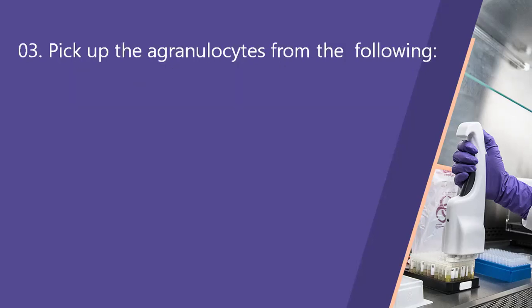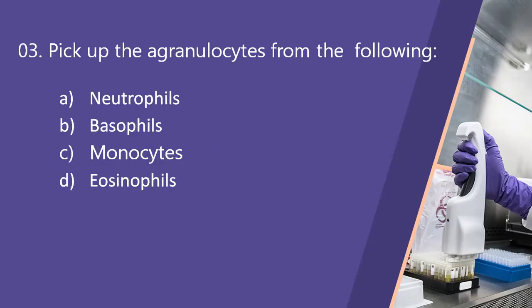Next question: pick the agranulocytes from the following. Option A, neutrophils. Option B, basophils. Option C, monocytes. Option D, eosinophils. Here the right answer is monocytes, option C.